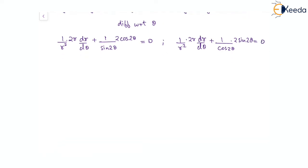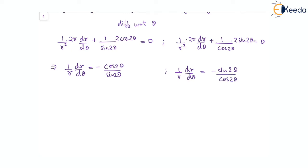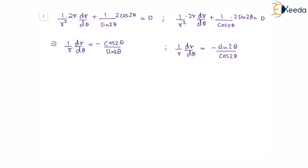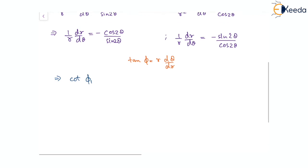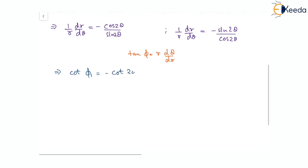From the first curve we get (1/r)(dr/dθ) = −cos 2θ / sin 2θ. From the second curve we get (1/r)(dr/dθ) = sin 2θ / cos 2θ. Since tan φ = r(dθ/dr), these expressions give cot φ₁ = −cot 2θ and cot φ₂ = −tan 2θ.